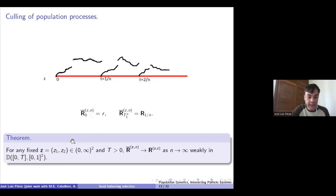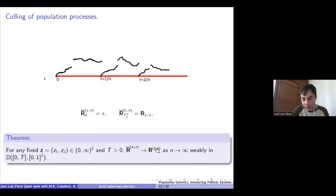One of the main results states that for any fixed level (Z_1, Z_2) ∈ (0,∞)² and any time horizon T > 0, we have the convergence of the sequence of cooling processes as n goes to infinity, weakly in the Skorokhod space of [0,T] into [0,1]². The limit is the frequency process under the constant population size assumption, which is the process we are actually interested in.